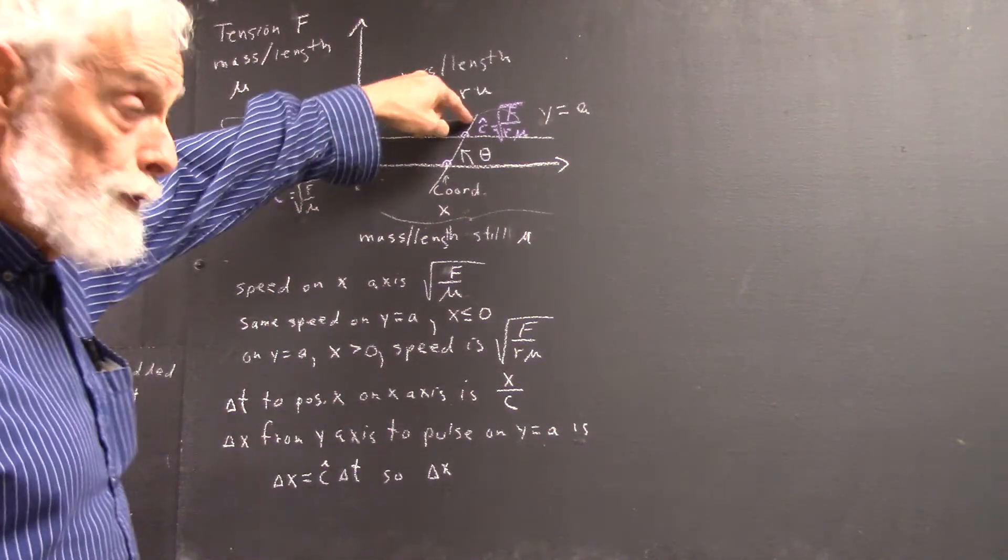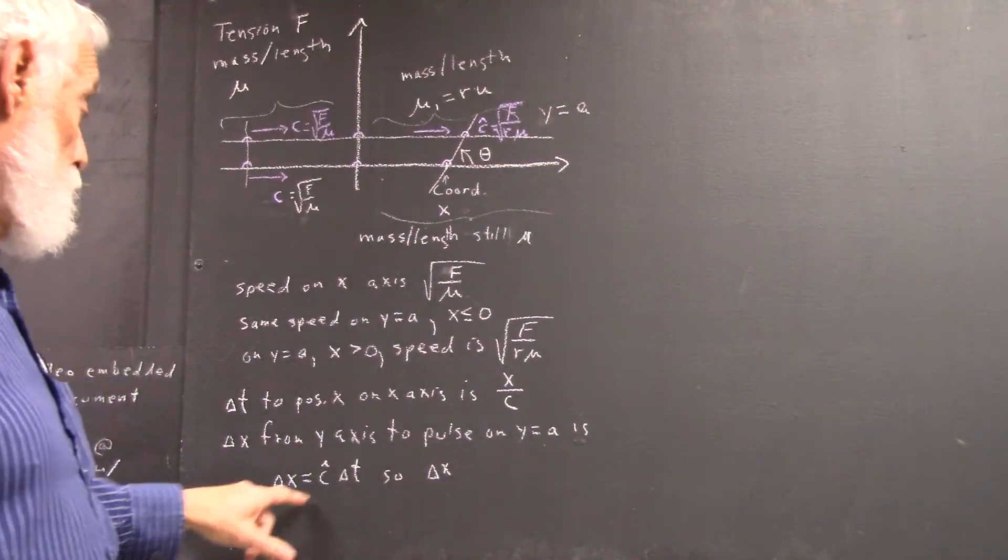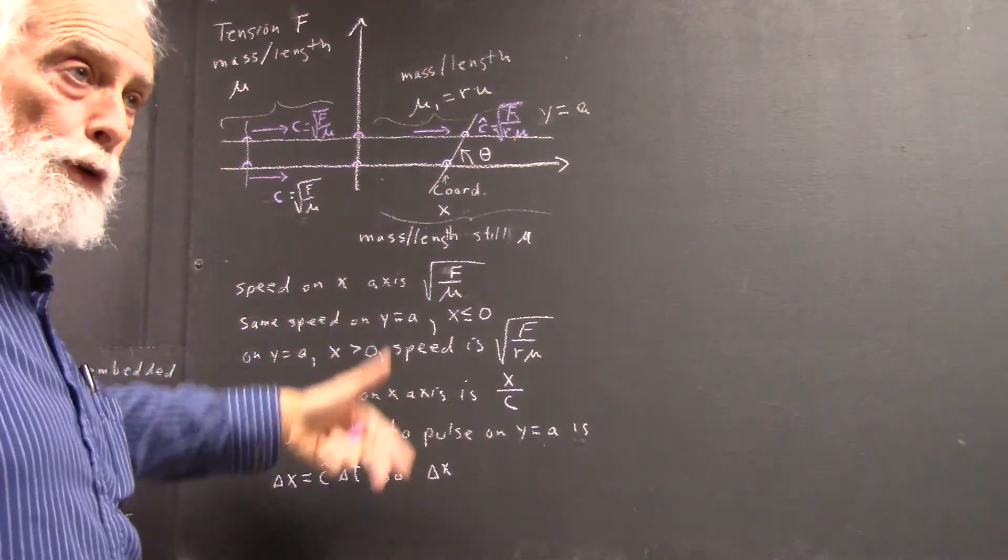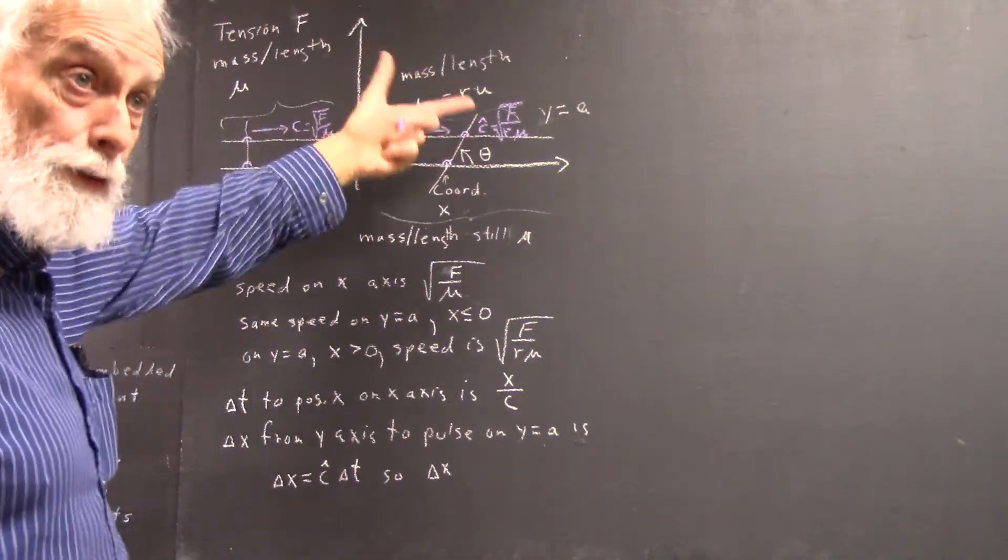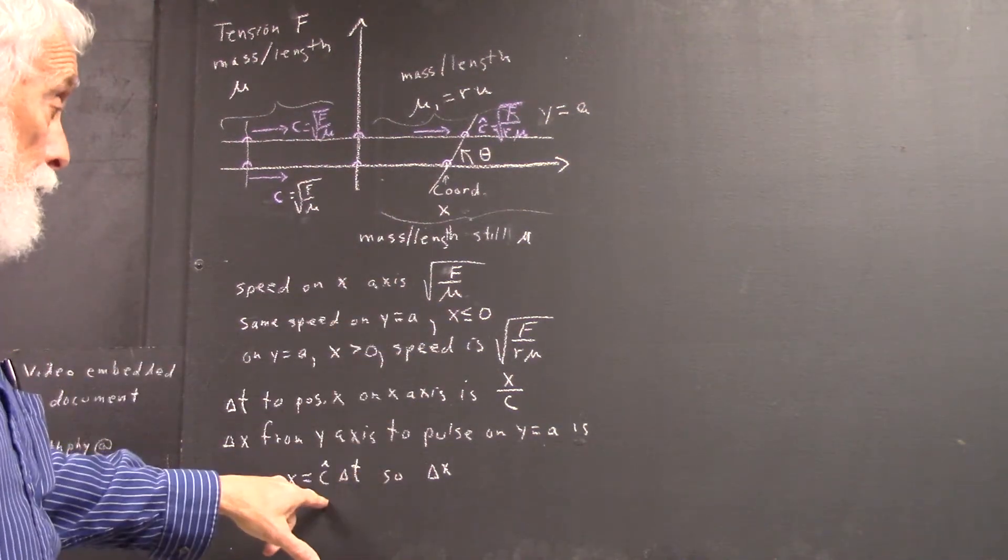Then the delta x on this interval has to be speed times the duration. Time interval is the same here as it is here. That's a hypothesis. Okay, well, that's the condition, and that's what we have.